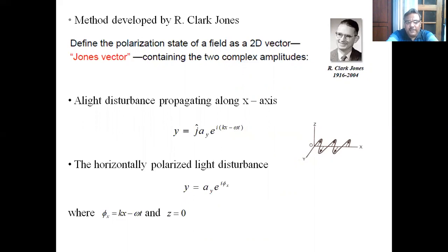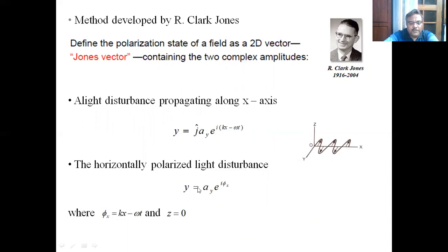R. Clark Jones defined the polarization state as a 2D vector, which he called a Jones vector, consisting of two complex elements. We consider a wave traveling in the x-direction, with vibrations in the y and z directions. The y-direction vibration is given by an expression with amplitude and an oscillatory term, representing horizontally polarized light. We substitute the phase factor φx = kx − ωt, evaluated at z = 0.